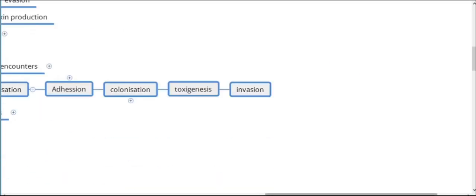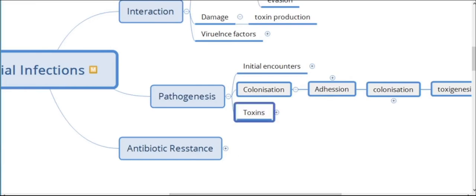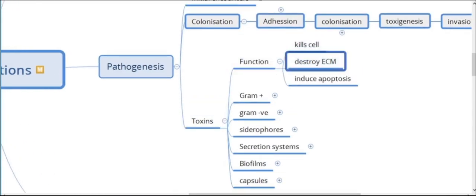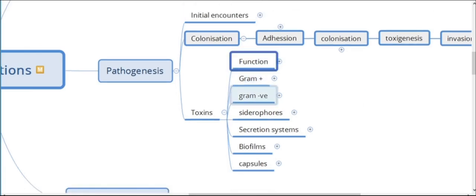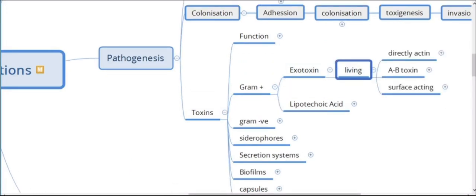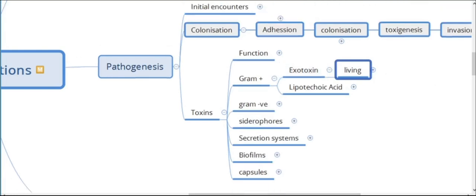Bacteria use toxins to damage cells and produce full-blown invasion of host tissues. The toxins help by killing cells, destroying the extracellular matrix, or inducing apoptosis. Toxins are classified broadly based on the bacteria that produce them. The toxin produced by a live gram-positive bacteria is called an exotoxin.